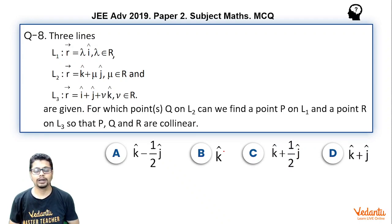Three lines L1, L2, L3 where a general point on L1 has position vector lambda i cap, a general point on L2 has position vector k cap plus mu j cap, a general point on L3 has position vector i cap plus j cap plus nu k cap where lambda mu nu are real.